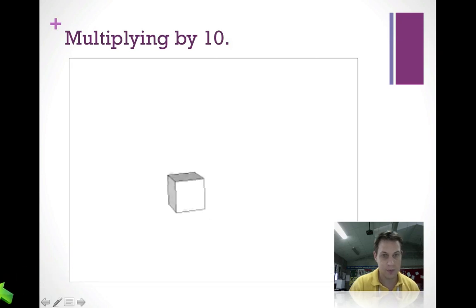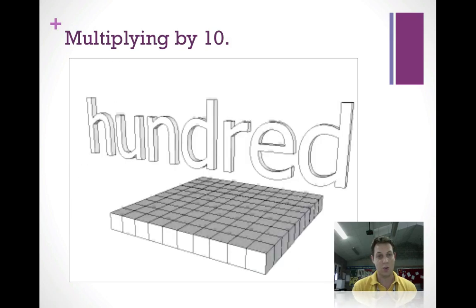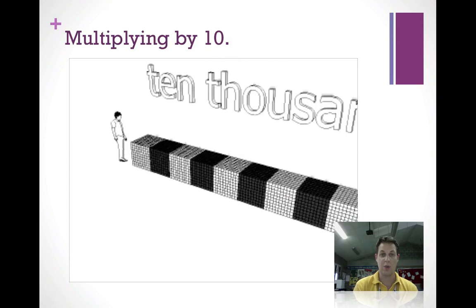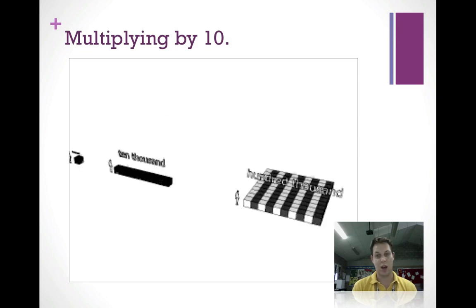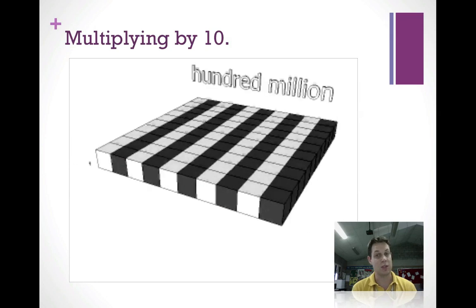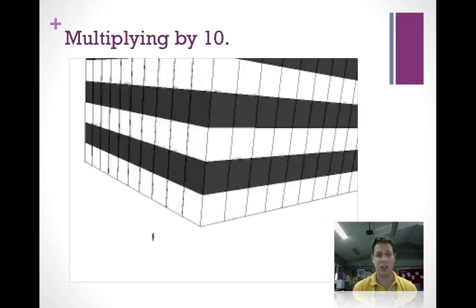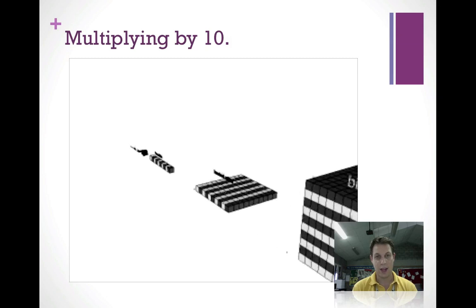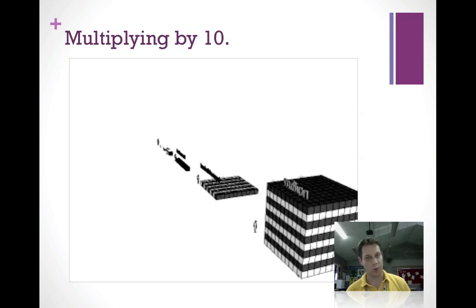We have one little cube representing one. Multiply by 10: ten cubes. Times 10 again: a hundred cubes. A hundred times 10: a thousand cubes. A thousand times 10: ten thousand. Ten thousand times 10: a hundred thousand. Then a million, ten million, a hundred million — that's a lot of cubes. Then 100 million times 10 is a billion cubes, enough to make a very tall building. Multiplying by 10, things start growing very, very fast — that's what you'll later learn is called exponential growth.